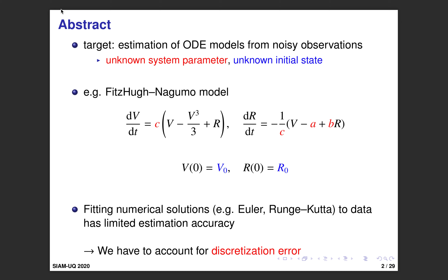For example, this is the Fitzhugh-Nagumo model for neural firing. This is a two-dimensional ODE model, and there are system parameters A, B, C, and also initial states V0 and R0. In practice, we often do not know A, B, C, or V0 or R0, so we want to estimate them based on observation data.